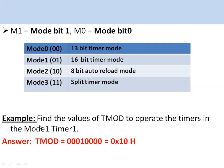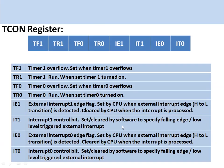To select timer 1 in mode 1, the value to be loaded in the TMOD register can be seen here. The last 4 bits correspond to timer 1, so 0001, which corresponds to timer 1 in mode 1 operation. The hex value 0x10 needs to be loaded in the TMOD register.